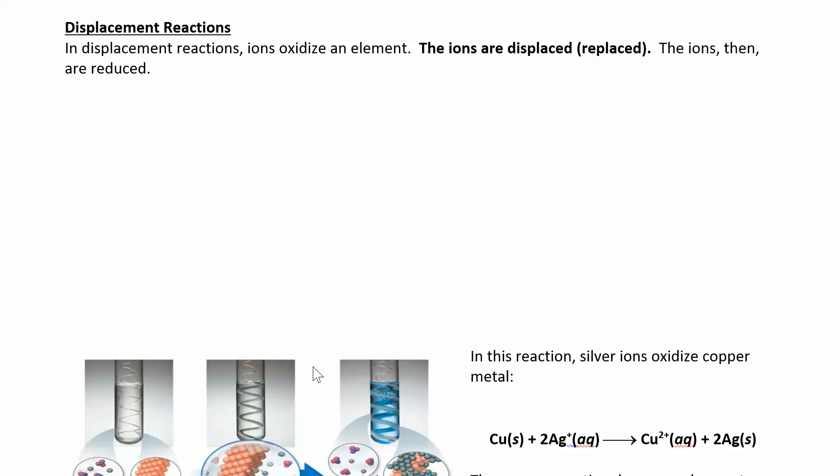Now we can look at a specific type of redox reaction called the displacement reaction. What's going to happen is we're going to take a metal and react it with an acid, or a metal and a salt. We'll see that the metal will replace a different metal in the solution, or the acid will break up and the metal will replace it to form a salt.